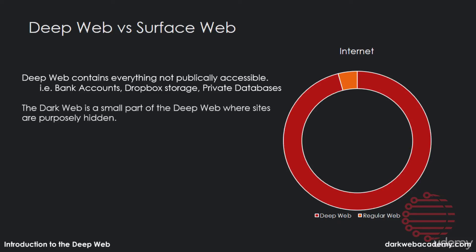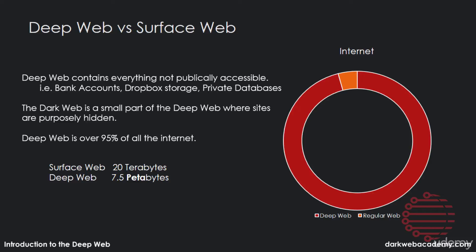When you're talking about the dark web, the dark web is actually only a small part of the deep web where sites are purposely hidden. The deep web is over 95% of the internet, and it's estimated to be around 7.5 petabytes of information, while the surface web is only about 20 terabytes.